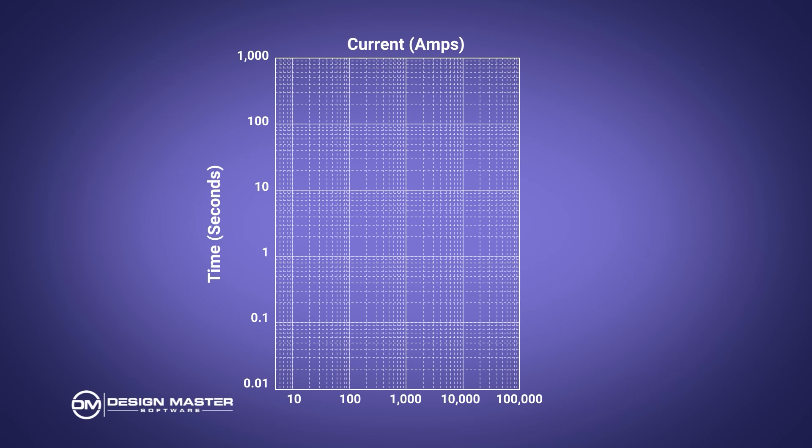Not all curves for all fuses that exist are published. Sometimes the manufacturer will publish a few curves, and the official way to handle the others is to interpolate between the provided curves. So if they give you a 50-amp curve and a 100-amp curve and you have a 60-amp fuse, you put a curve in between and figure out what it looks like. That's not something you really want to do by hand, but when you have software where the curves are digitized, it's a bit easier to figure out.